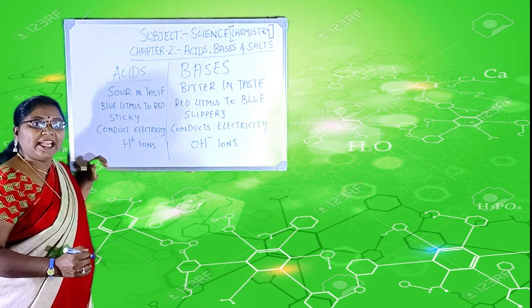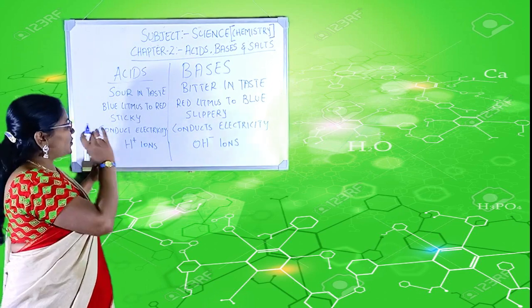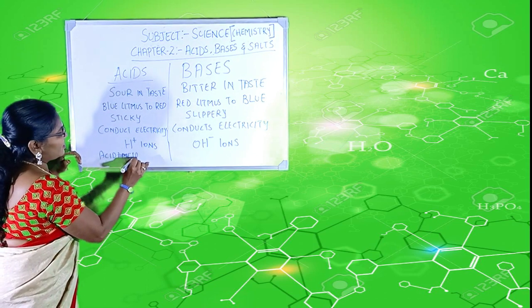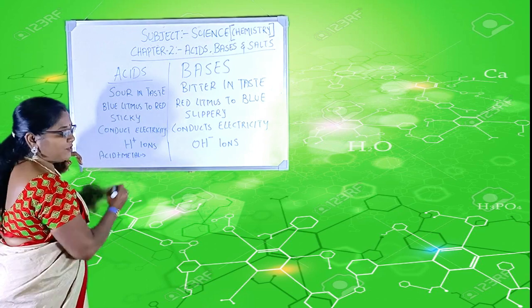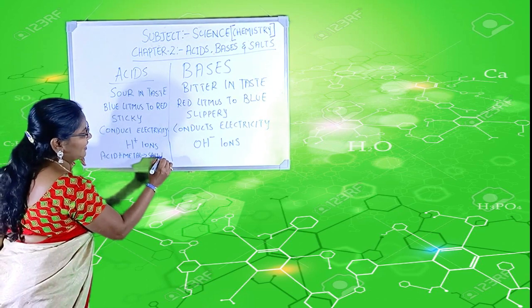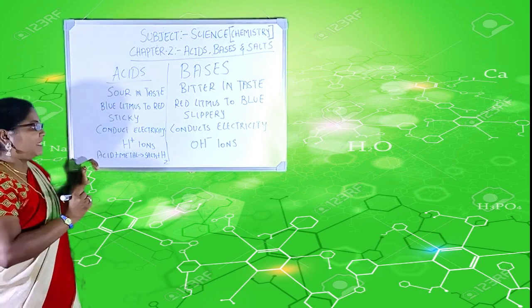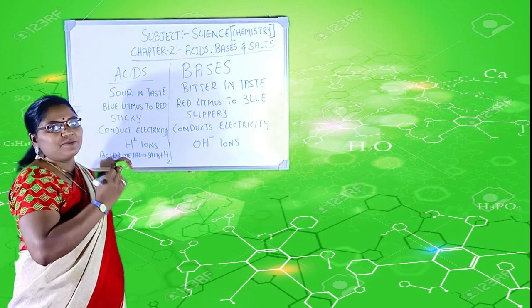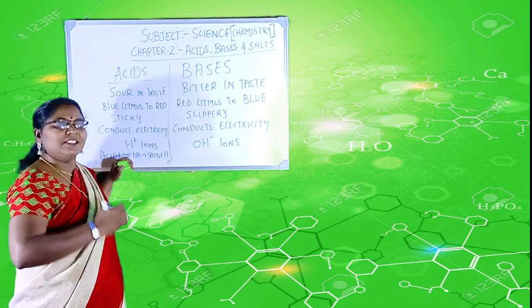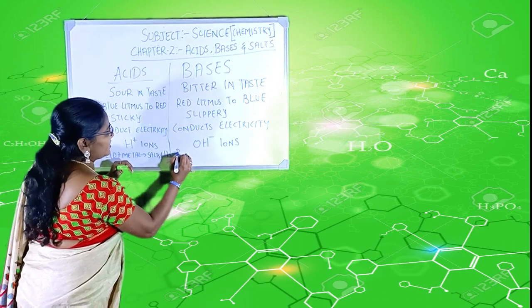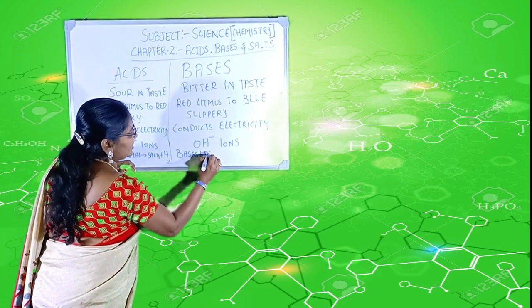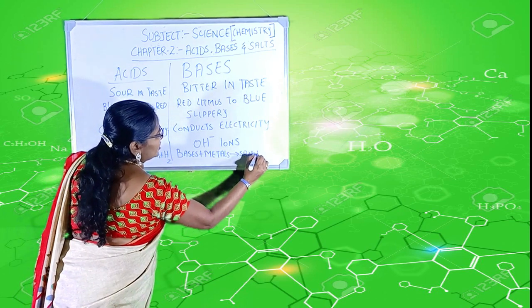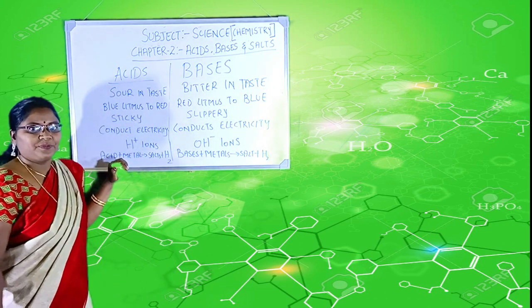And, when acid reacts with metals, it is highly reactive with metals. When it reacts with metals, it gives respective salts and hydrogen gas. Similarly, bases also react with certain metals, not with all the metals. Certain metals, it reacts, it produces respective bases and produces hydrogen gas. So, bases react with certain metals to produce hydrogen gas.